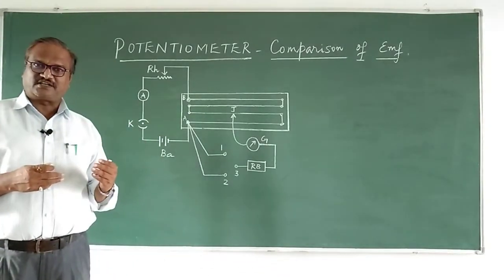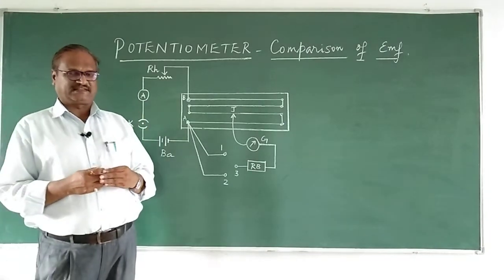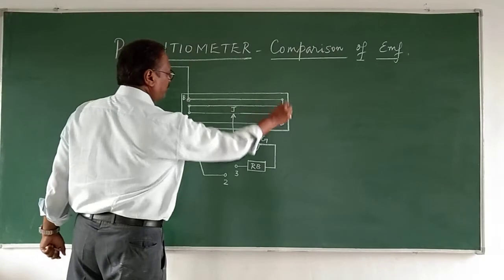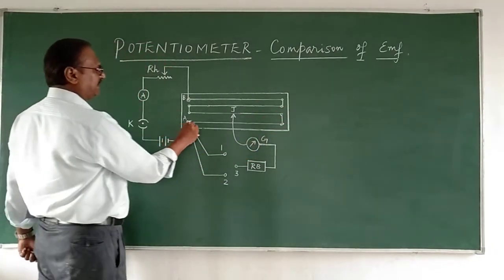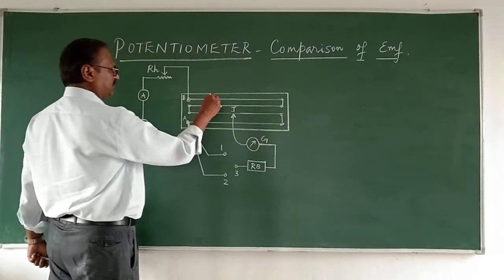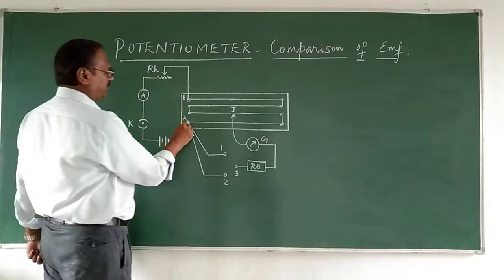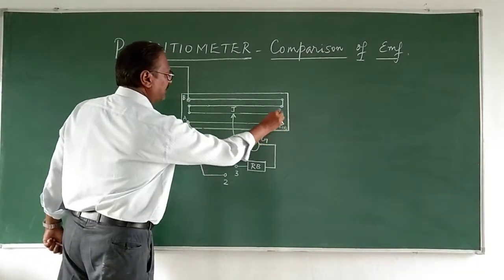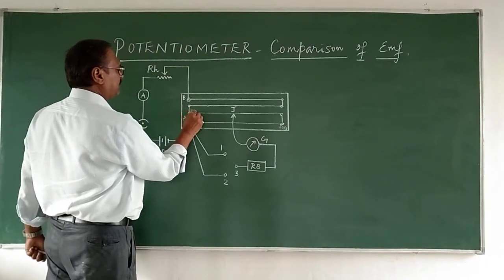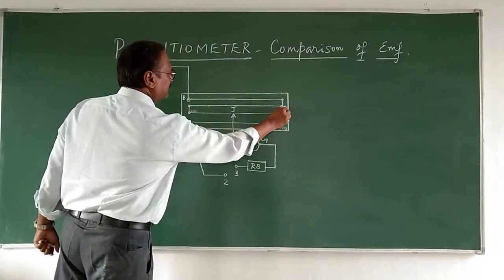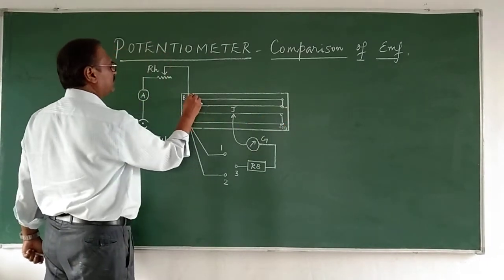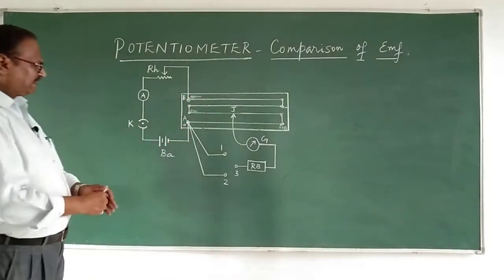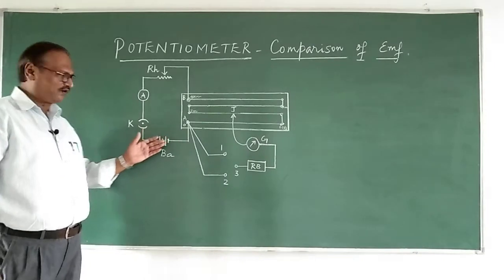The same circuit is here. This is the potentiometer and I have taken it with a four-meter bridge. Here it starts at zero and goes to 100, here 200, here 300, and here 400 centimeters.